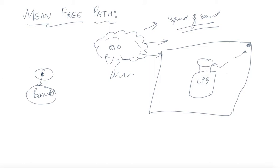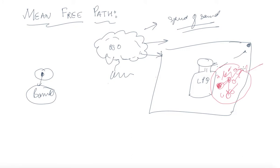The answer is that even though molecules have a huge speed, they suffer many collisions because gas molecules are nearby. If a particular molecule is trying to reach a certain point, it will undergo many collisions — it will come back, have another collision, and move slowly and steadily. That is why we don't get the smell instantaneously. This leads us to the discussion of mean free path — what is the free path available to a molecule.